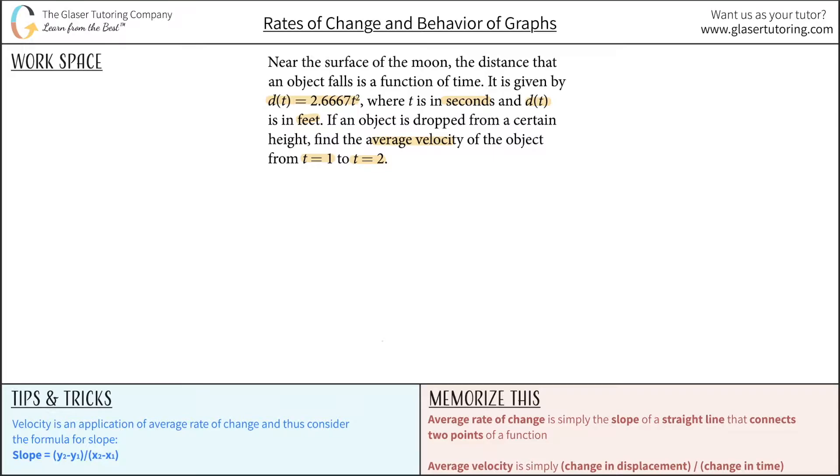Let's try to visualize this. Here's the surface of the moon. We have a particular object up here, and the object is going to fall. We know that the distance that this object covers is a function of the time that has elapsed, and it is given by this formula.